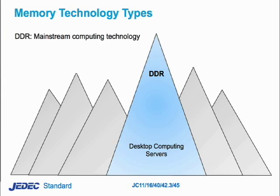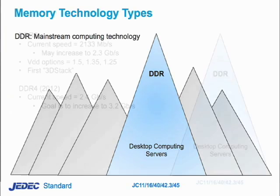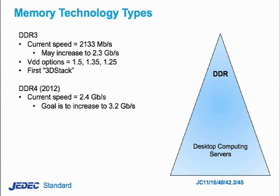When most people think of memory, they think of DDR, which is what is commonly used in desktop computers and servers. It's the mainstream commodity memory technology that represents most of the market. DDR3 is right now the mainstream computer system memory technology. It was originally defined to run at up to 1600 megabits per second, but now the specification allows for up to 2133.